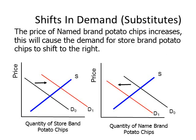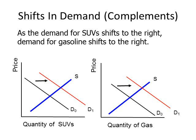For example, an increase in the price of name-brand potato chips will cause more consumers to purchase store-brand potato chips, shifting the demand for store-brand chips to the right, while demand for name-brand chips shifts to the left. For complements, if the demand for SUVs shifts to the right, the demand for gasoline will shift to the right as well, because SUV drivers will demand more gasoline to keep their vehicles running.